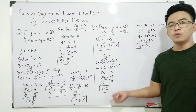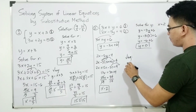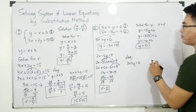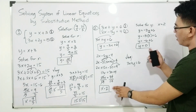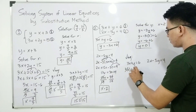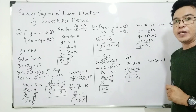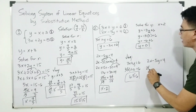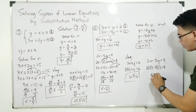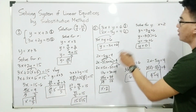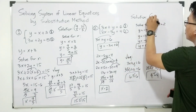Before declaring the solution set, we need to do the checking. Using the original equations with x = 2 and y = 0: equation 1 — 3(2) + 0 = 6 ✓; equation 2 — 2(2) − 5(0) = 4 − 0 = 4 ✓. Both equations are satisfied, so the solution for this system is (2, 0).